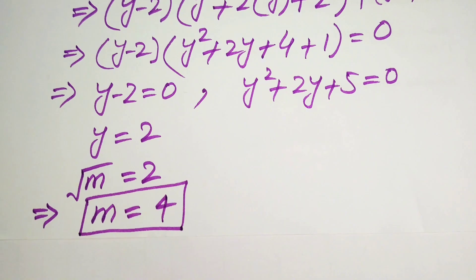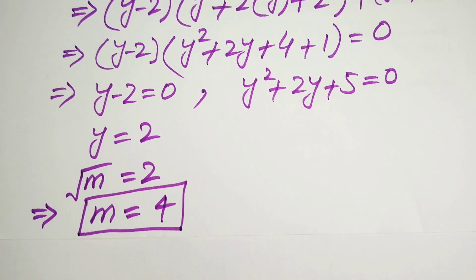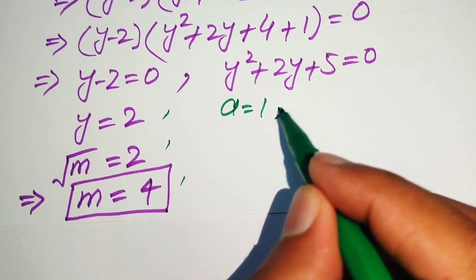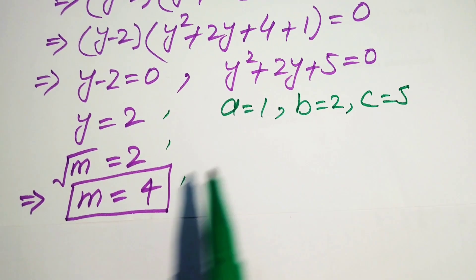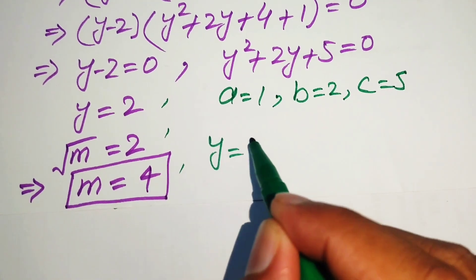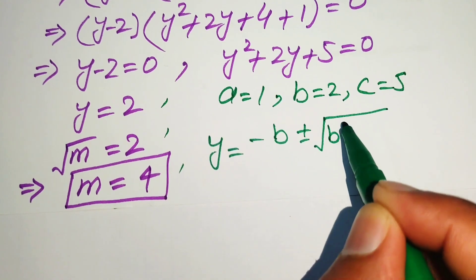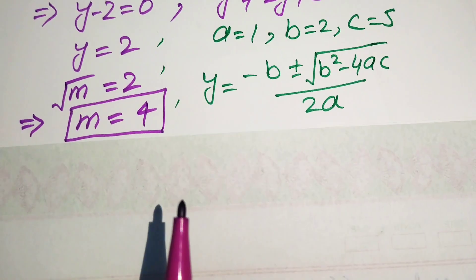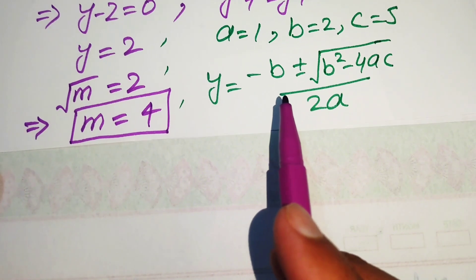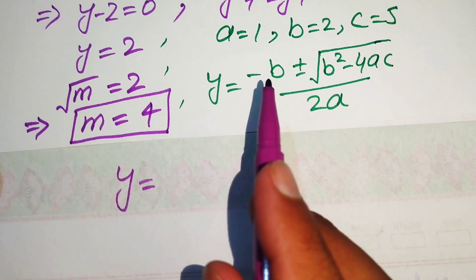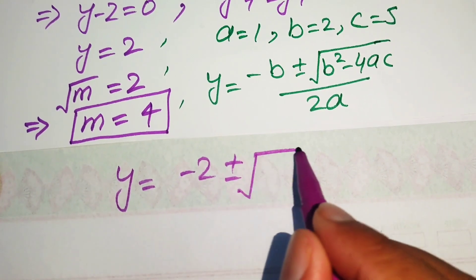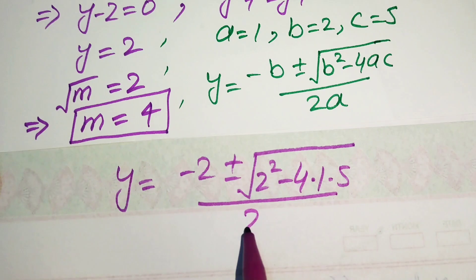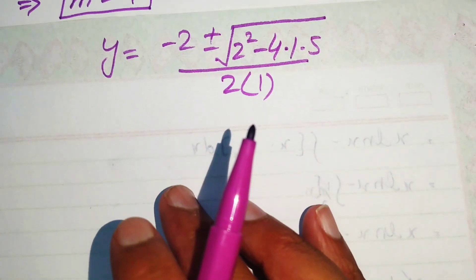So m equals 4 is the first real root of the given equation. To find the other roots, we apply the quadratic formula to y squared plus 2y plus 5 equals 0. The coefficients are a equals 1, b equals 2, and c equals 5. The quadratic formula gives y equals negative b plus or minus the square root of b squared minus 4ac, divided by 2a. Substituting these values: y equals negative 2 plus or minus the square root of 2 squared minus 4 times 1 times 5, divided by 2 times 1.